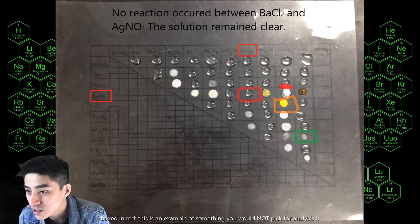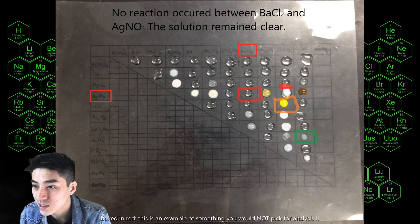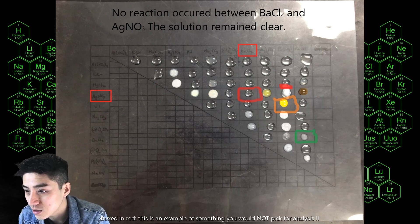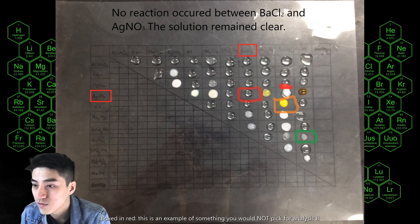There was a reaction that's there on the grid that I painted in red, and then you could see where those two boxes intersect—it was barium chloride and silver nitrate. There was no reaction that occurred between those two chemicals, so that would be something that you wouldn't pick for analysis two.